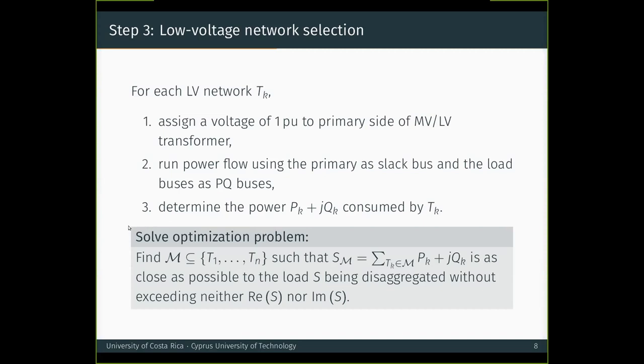When we have these estimates, we now solve the following optimization problem. Find a subset M such that its total consumption S_M, which is the sum of those estimates, is as close as possible to the load S being disaggregated without exceeding neither its real nor its imaginary part. With an exhaustive method, this would require an exponential time that depends on the size of the set of available networks. This problem can be solved using dynamic programming in pseudo linear time.